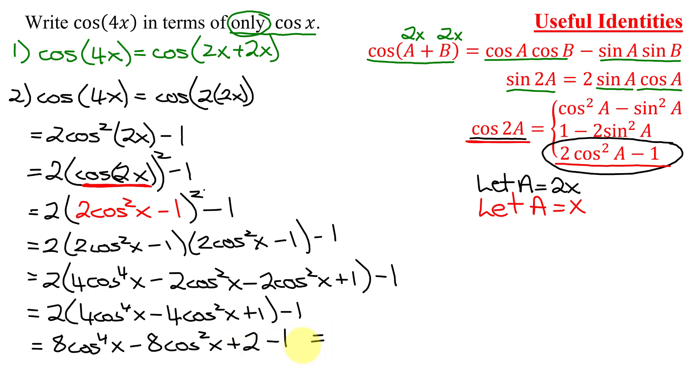The only thing I have to do is collect up like terms. So I'm going to get 8 times cosine to the 4th x minus 8 cosine squared x. These are unlike terms, but then I have 2 minus 1, which is plus 1. So this is the answer when I need to write the cosine of 4x in terms of just cosine x.